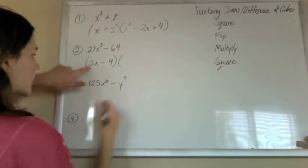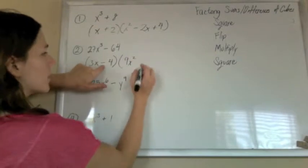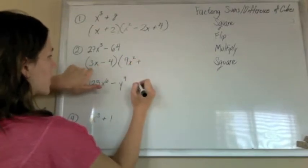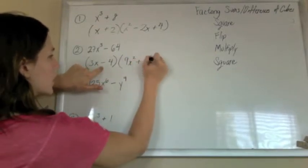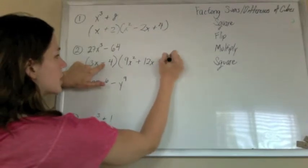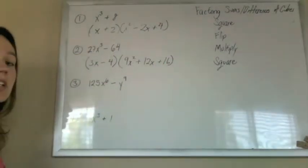Then we're going to square, so 9x squared. Flip the sign, plus, multiply them together, 12x, square the last, plus 16. And that's good to go.